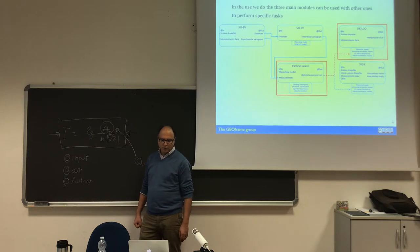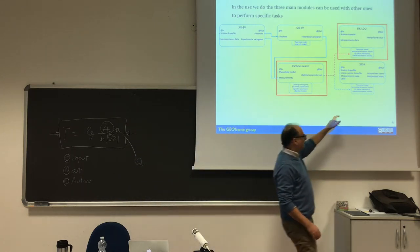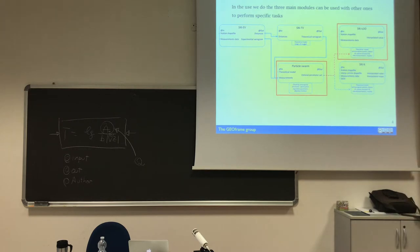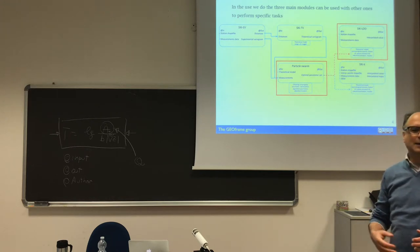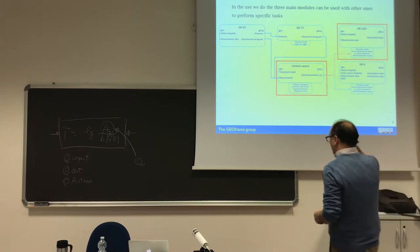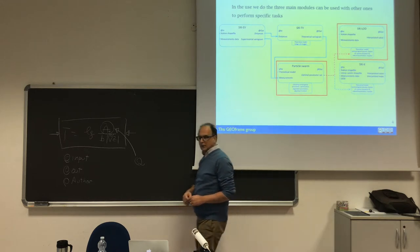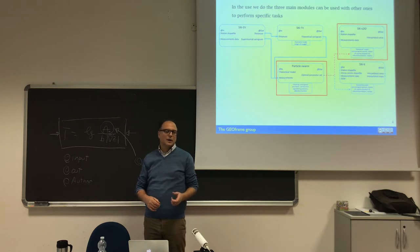So when we use this is the connection of the modules. The experimental variogram goes to the SICK variogram and then we have from here the map of the measurement point. Actually we have two other components. One is called particle swarm, and particle swarm is a calibrator, a component that helps you to choose automatically the parameters of the model variograms.